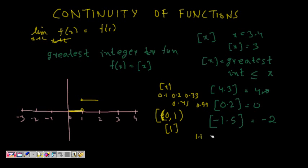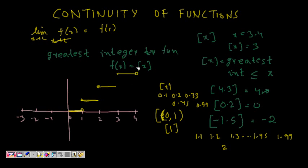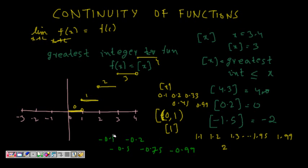At x = 1, the greatest integer less than or equal to 1 is 1, so there is a discontinuity. For 1.1, 1.2, 1.3 up to 1.99, ⌊x⌋ is 1. At x = 2, it jumps and becomes 2. Between 3 and 4 it will be 3, and at 4 it becomes 4. This is how the greatest integer function looks like a staircase.